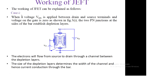In Case 1, when voltage VDS is applied between drain and source terminals and the voltage on the gate is 0, the two P-N junctions at the sides establish depletion layers. Electrons flow from source to drain through the channel between the depletion layers. The size of the depletion layer determines the width of the channel and hence current conduction through the bar. When VGS is 0, maximum current flows from the device because the depletion layer is small and the N-channel width is large.